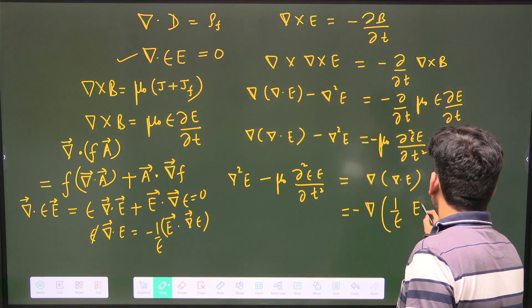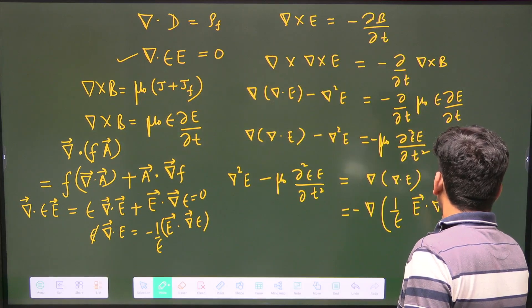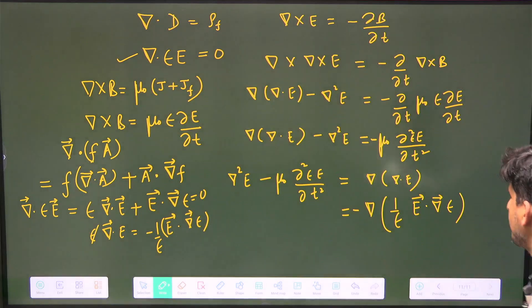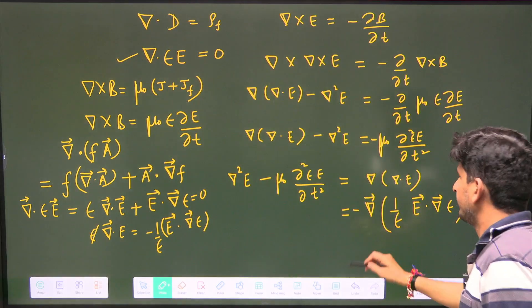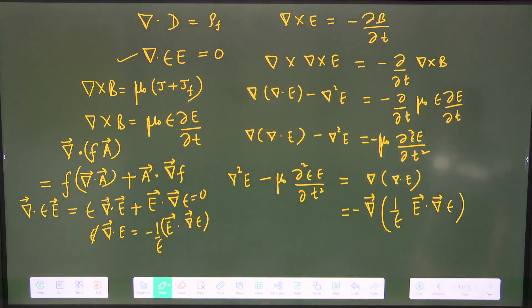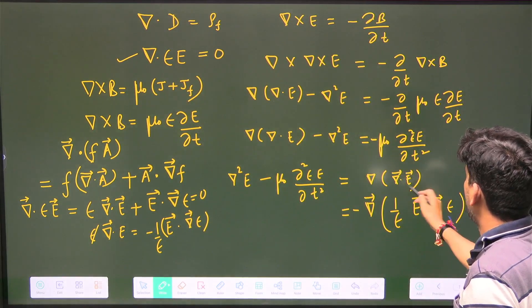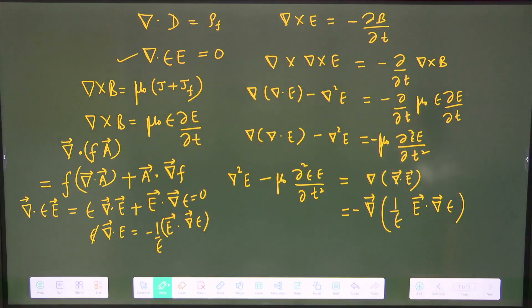Now I can write this as grad of minus sign one by ε times E dot grad of ε. I have just replaced divergence of E.